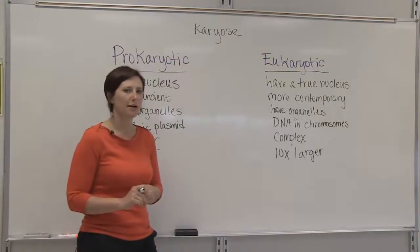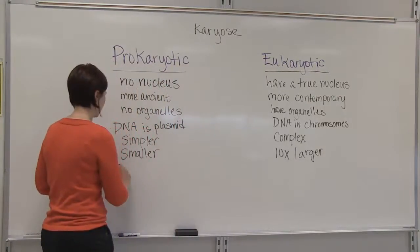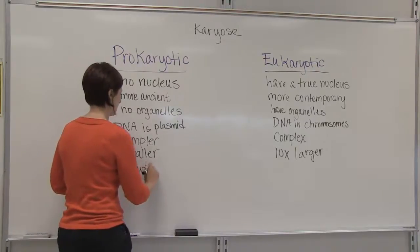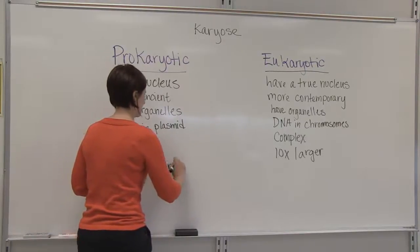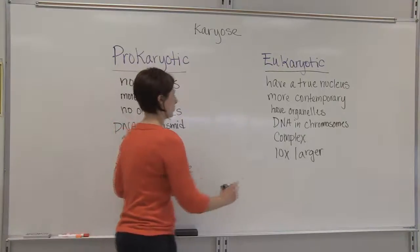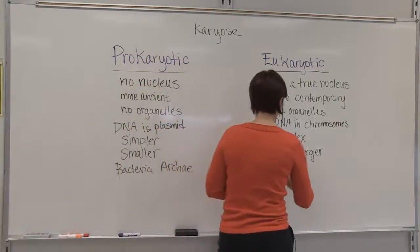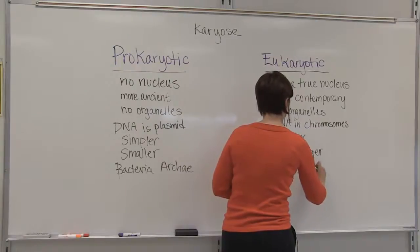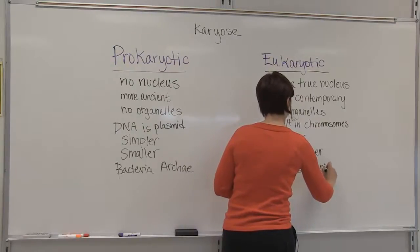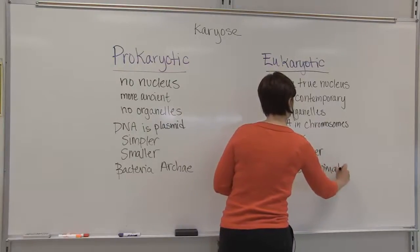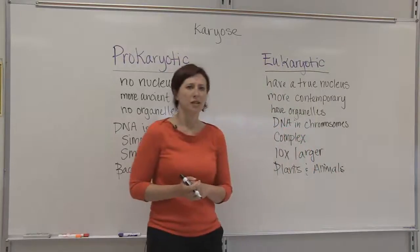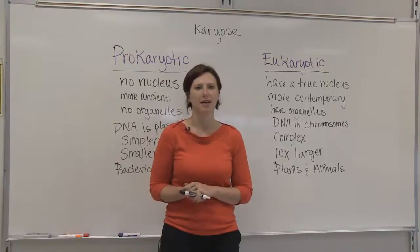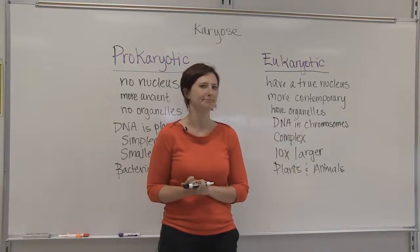These types of cells, prokaryotic cells, can be found in bacteria and archaea, whereas eukaryotic cells make up plants and animals. This should give you a background on some of the major differences between prokaryotic and eukaryotic cells.